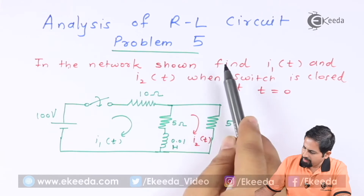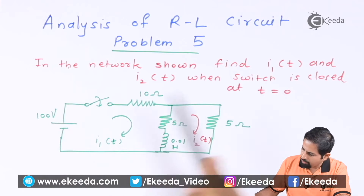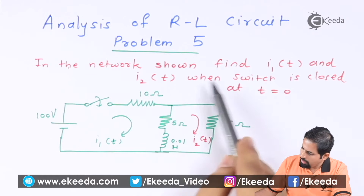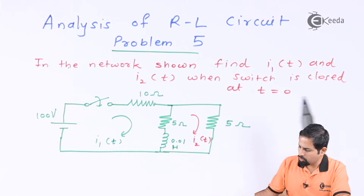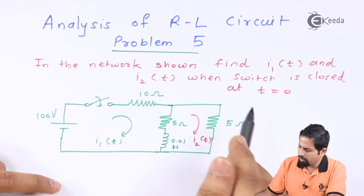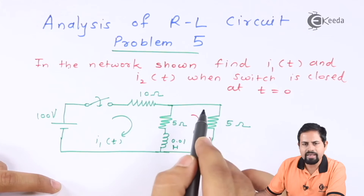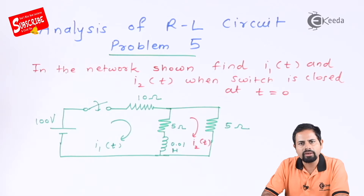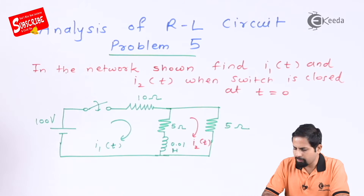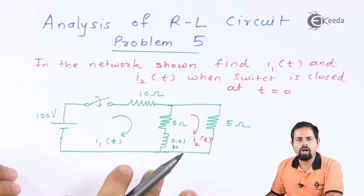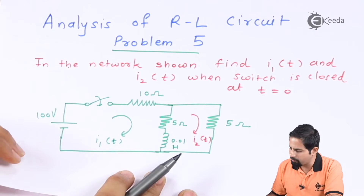In the network shown, find i1(t) and i2(t) which are shown by arrows, when the switch is closed at time t equal to 0. The routine procedure: we will find what happens at t=0 minus, then at t=0 plus, then for t greater than 0, and then we will solve a differential equation. Let us draw the circuit at t=0 minus.